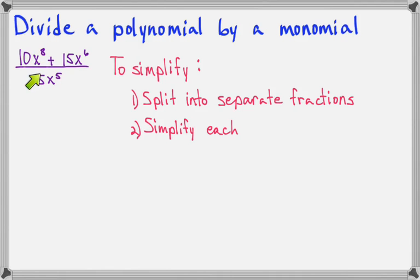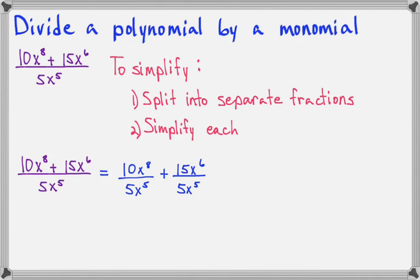So, you know that if we have two fractions, or two terms rather, divided by 5x to the 5th, that's the same as having each term divided by 5x to the 5th. So, our problem becomes 10x to the 8th over 5x to the 5th plus 15x to the 6th over 5x to the 5th.